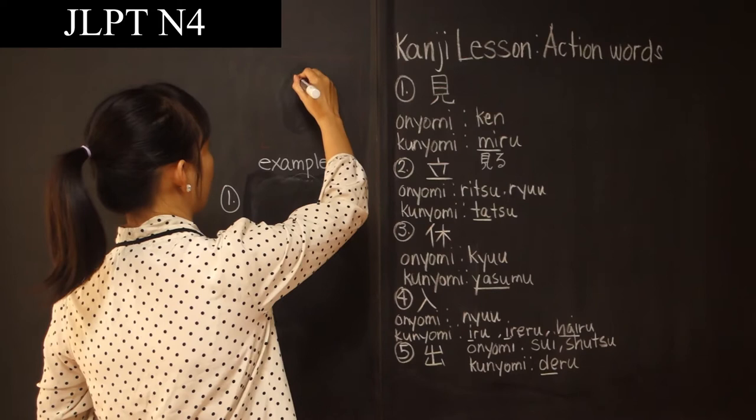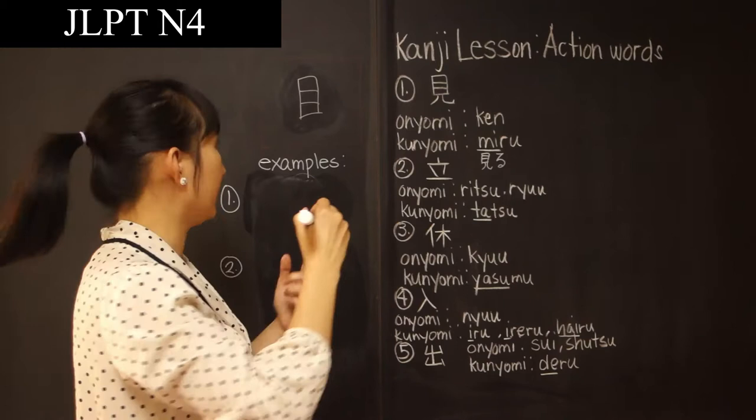One, two, three, four, five. As you can see there is Me or Ai. Six, seven. So this kanji has seven strokes total.